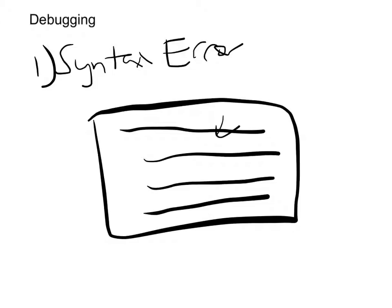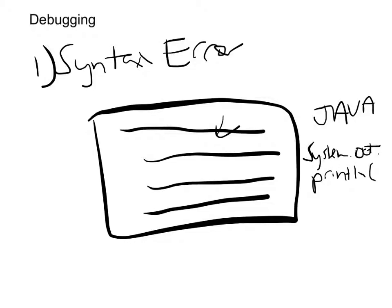A syntax error essentially means that somewhere in your code, one line is wrong — it's not in accordance with the language you're writing. So as an example, in Java, if you have to print out a new line you write system.out.println, then write what you want to print out in between the brackets, and end with a semicolon. If by mistake you wrote 'sitem.out.println' instead of 'system', that's a syntax error. The Java compiler is going to recognize it and say it can't compile that because sitem is not a valid command. You'd have to put the y and s back in, and then your program will compile.